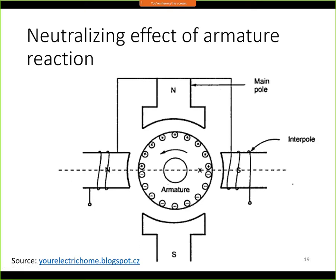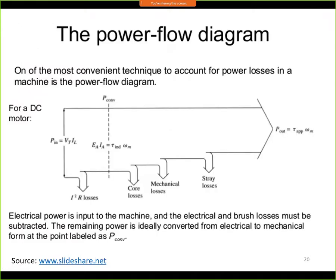To neutralize the effect of armature reaction, one way is to rotate the brushes. Another way is to create an auxiliary magnetic field using interpoles that suppresses the interaction. The interpole is a smaller pole placed at 90 degrees relative to the main magnetic pole.